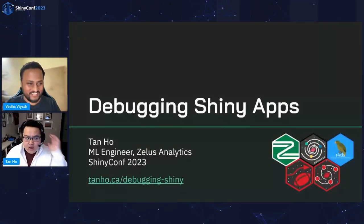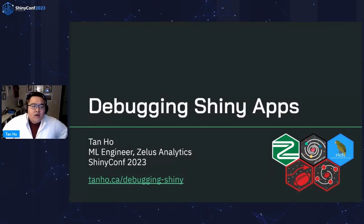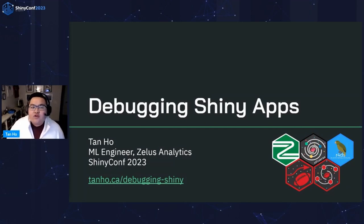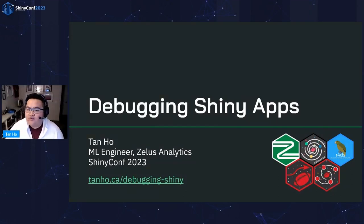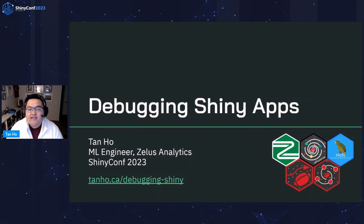Hello. Thank you for the wonderful introduction. My name is Tan. I'm an ML engineer with Zealous Analytics. I maintain the Dynasty Process Trade Calculator, which is a Shiny app that serves over 200,000 unique monthly users, and I work on a bunch of other side projects including NFLverse and mentoring at the R4DS online learning community. And most importantly, I love debugging. I'm super excited to be talking about debugging Shiny apps today. You can find materials for this talk at tanho.ca/debugging-shiny.